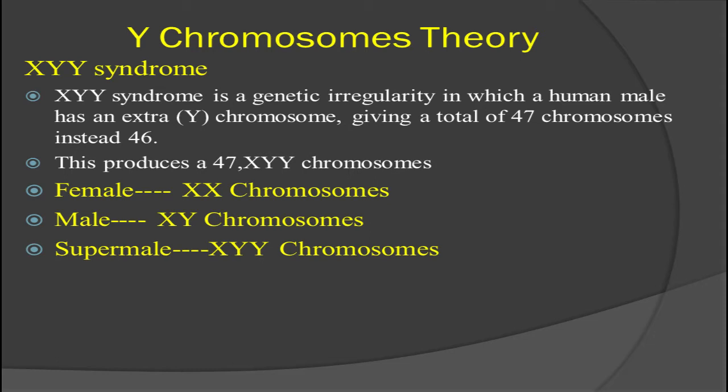This produces a 47 XYY chromosome configuration. It is important to keep in mind that in females there are XX sex chromosomes, while in males there are XY chromosomes. According to different criminologists, those males in whom the Y chromosome is extra have been given the name 'super male.' This theory is just applicable on the male gender because the Y chromosome is only present in males.